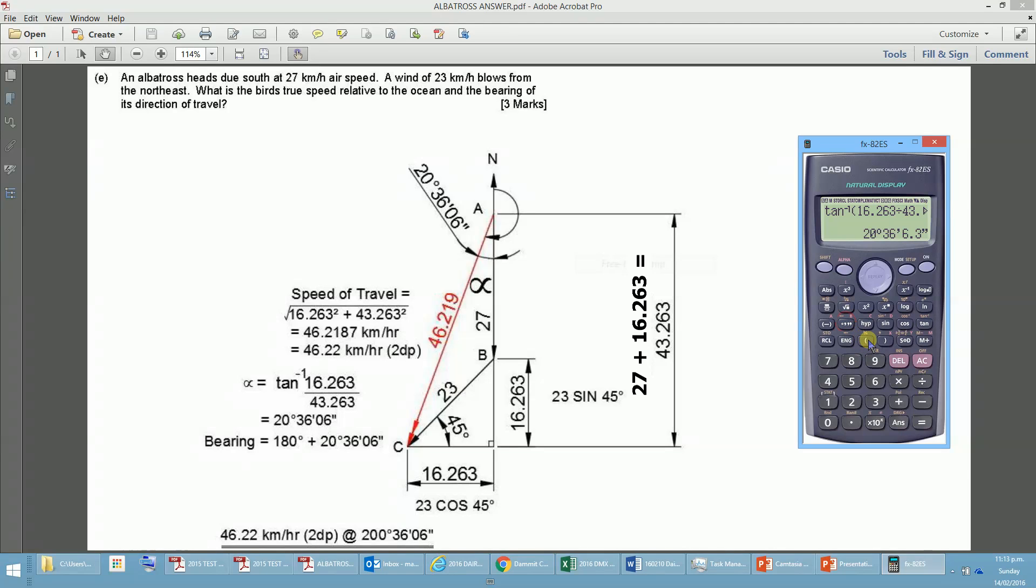and that gives us our bearing in degrees and decimals, push our little button here, and we get 20 degrees, 36.06, and so the bearing will be 180 plus that, so we could just go plus 180 equals, and again, 236.063.